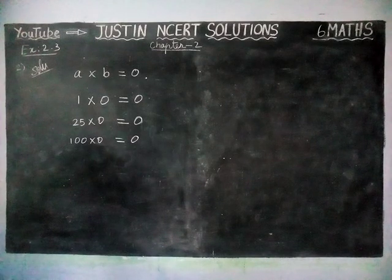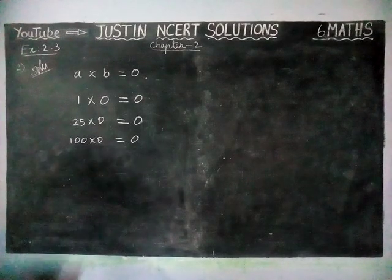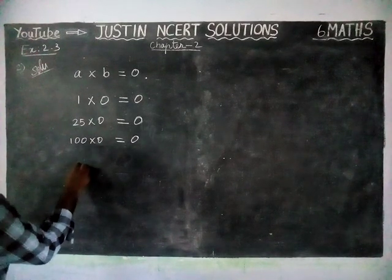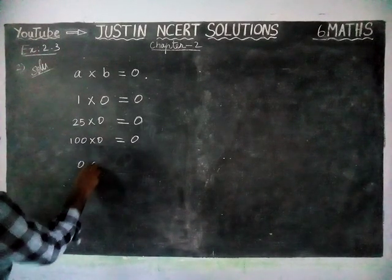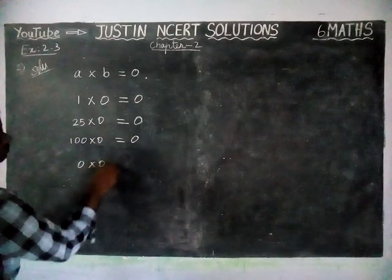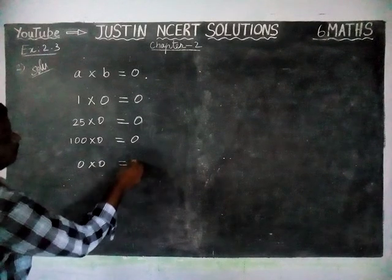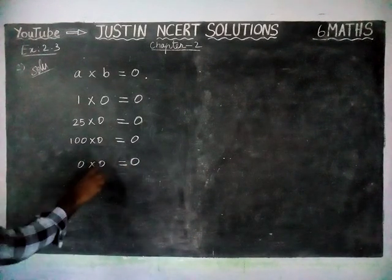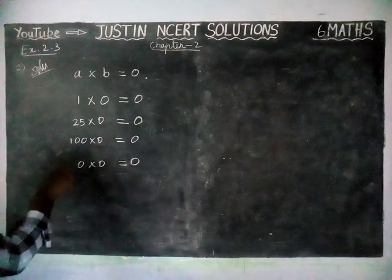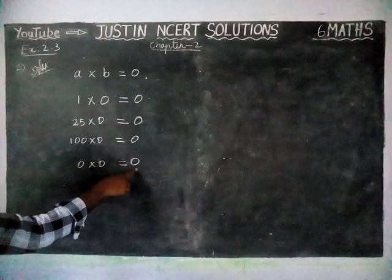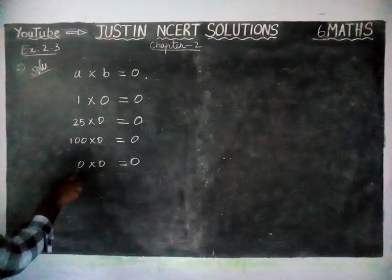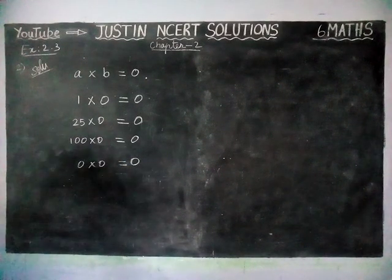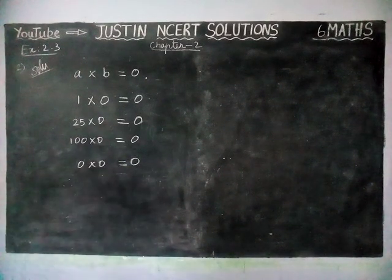Next, we are going to try it with two 0s. 0 into 0 is equal to 0, automatically. If one 0 is multiplied with another number, we will get 0. Here, both are also 0, so we will get 0 only as the answer.